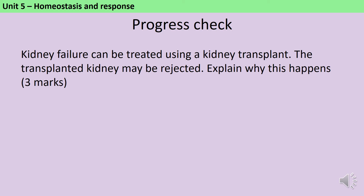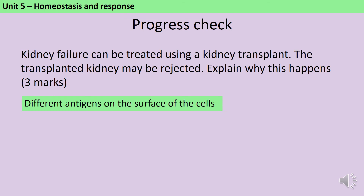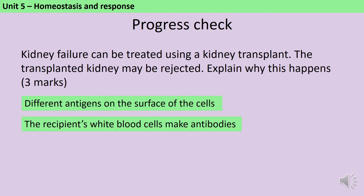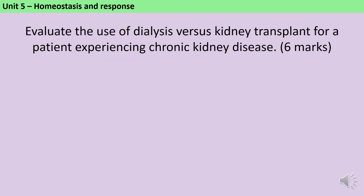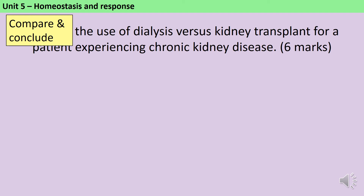Pause the video and write down three bullet points explaining why a transplanted kidney may be rejected. The transplanted kidney has different antigens to those of the patient receiving it. This is detected by the person's white blood cells, which make antibodies, and the antibodies attack the antigens. This topic provides the exam board with a great opportunity to ask you to evaluate — and anywhere in AQA GCSE science that you meet the word evaluate, you'll get marks for comparing and for writing a conclusion, so it's really important to come down on one side of the fence and say which one is better.